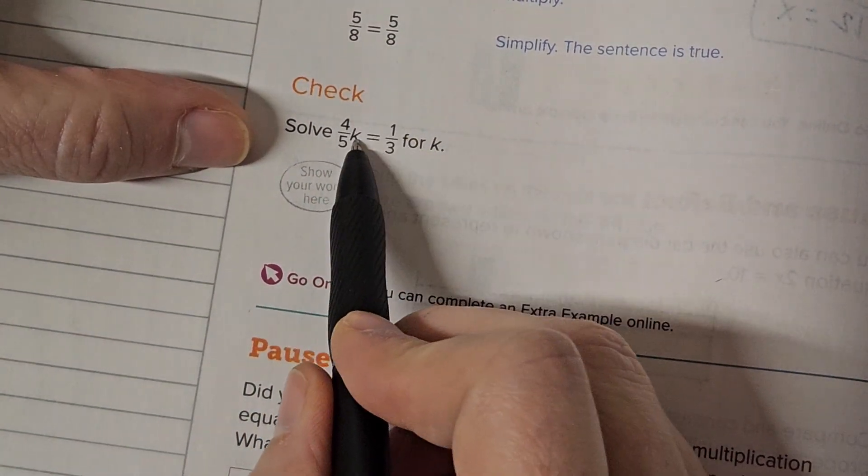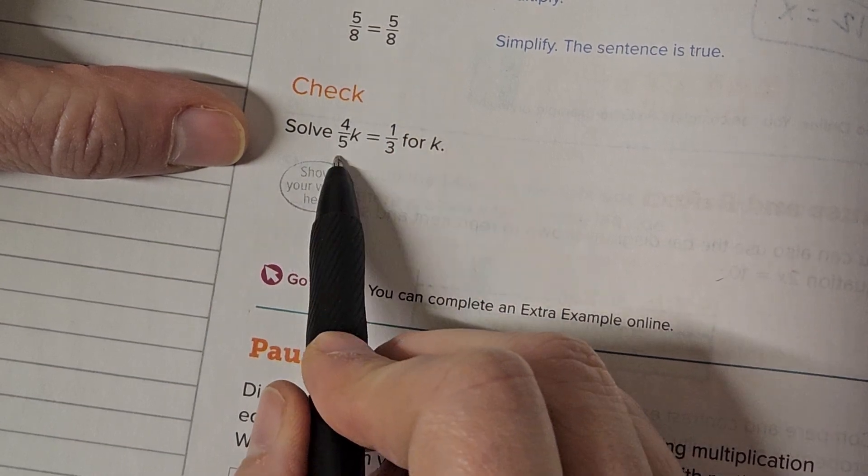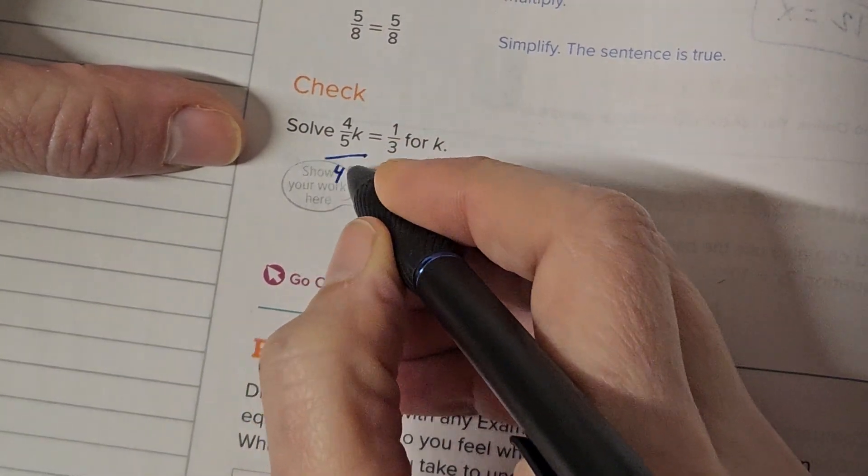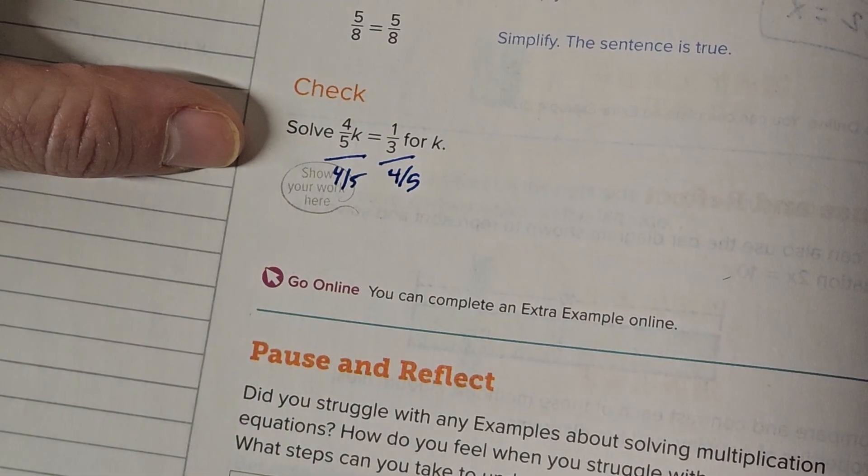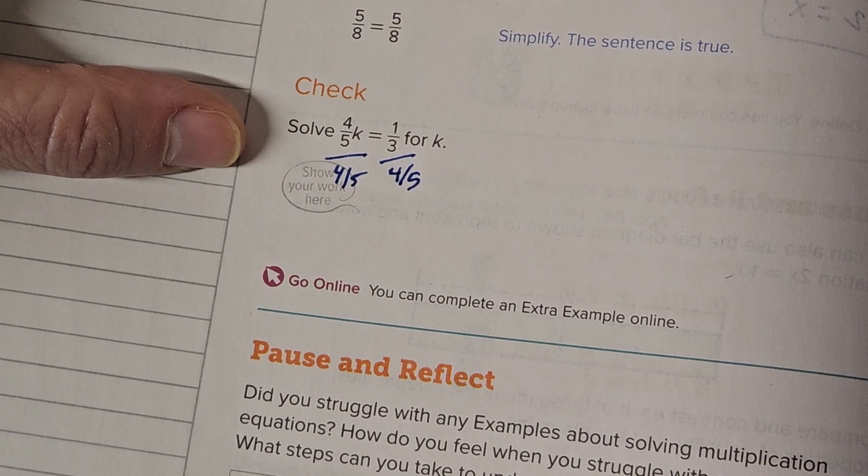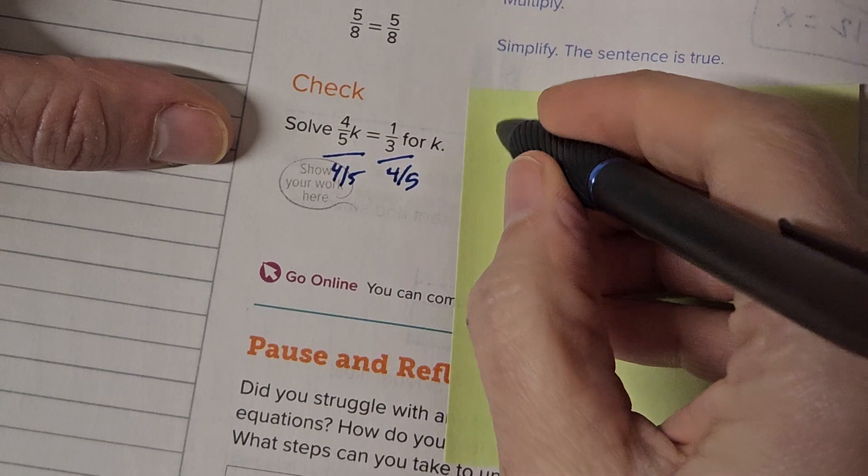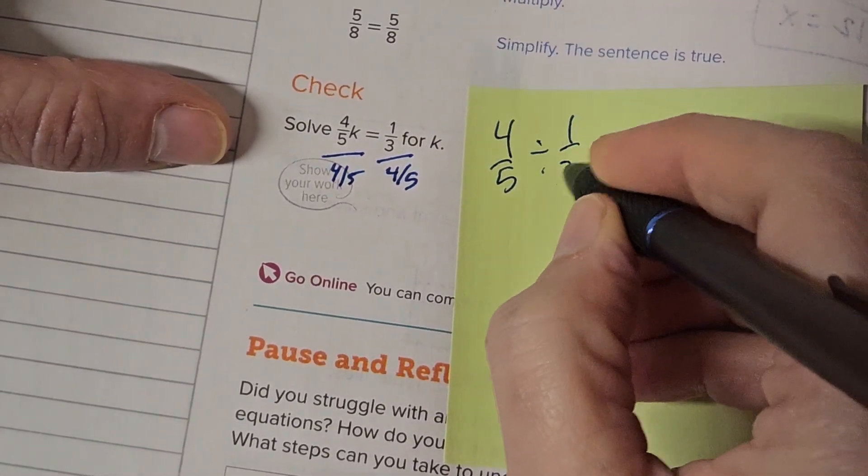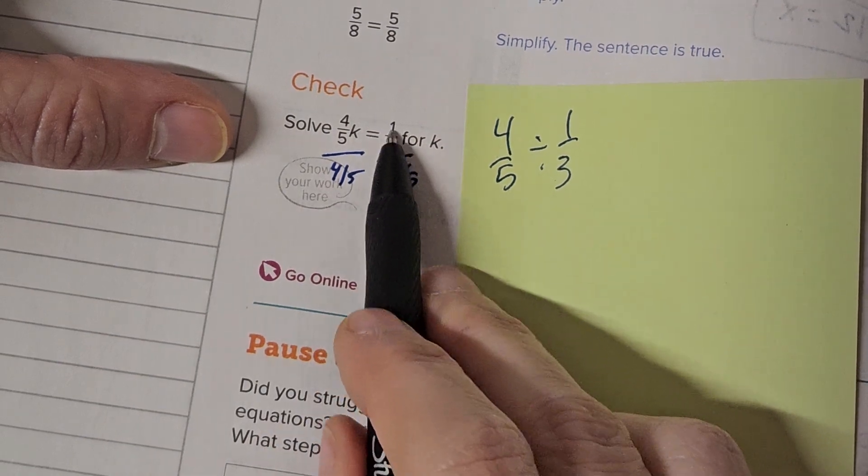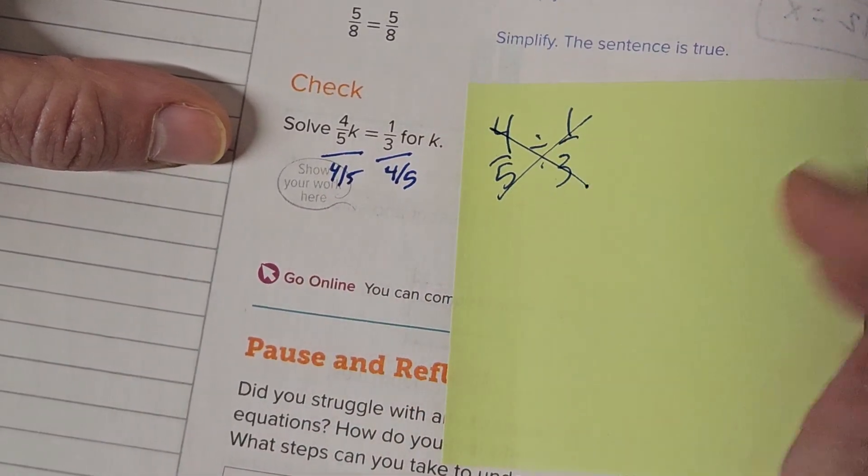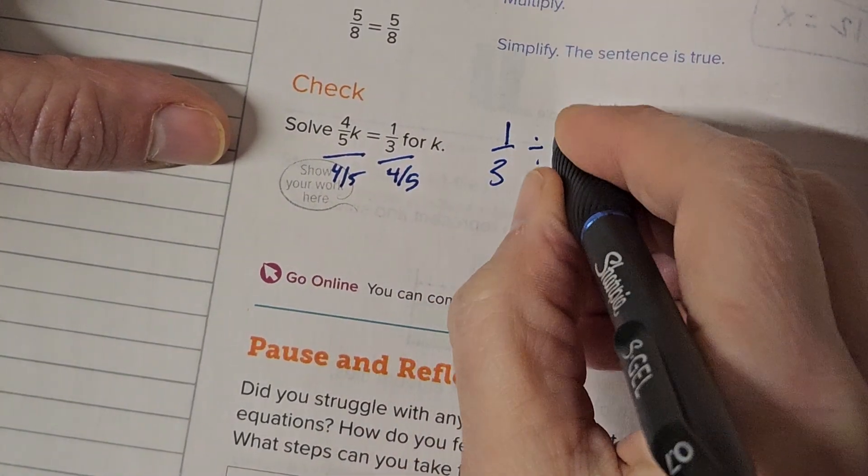So we have 4 fifths times k equals 1 third. Well, what are we multiplying by? We're multiplying by 4 fifths, so that means we need to divide by 4 fifths, divide by 4 fifths. And here's what a lot of students do wrong. I'm going to write it on a sticky note, so I don't have to keep it in my book. I can throw it in the trash. Students will say, oh, 4 fifths and divide 1 third. But this is backwards. This does not say 4 fifths divided by 1 third. Wrong.